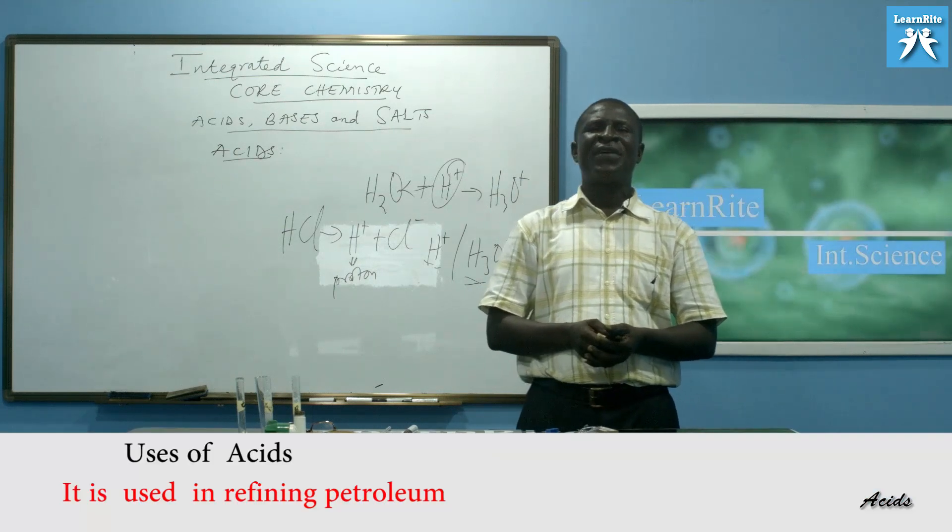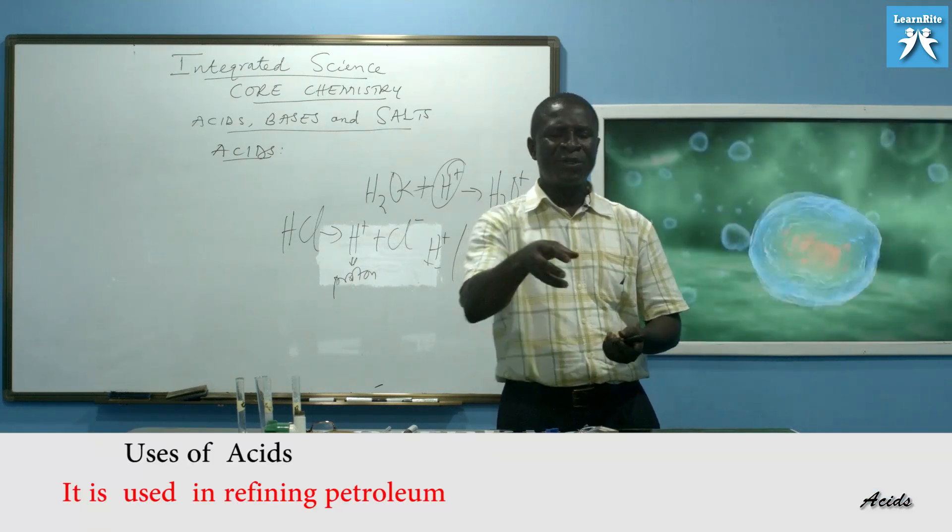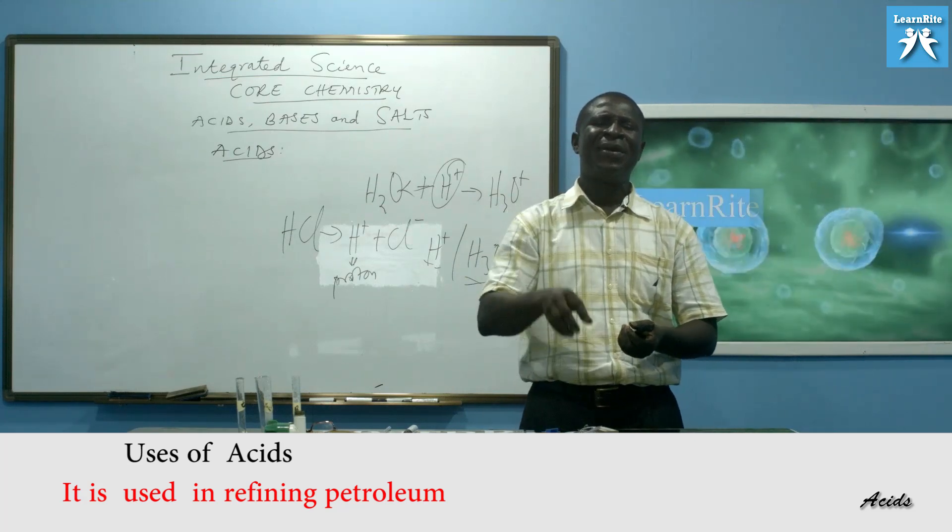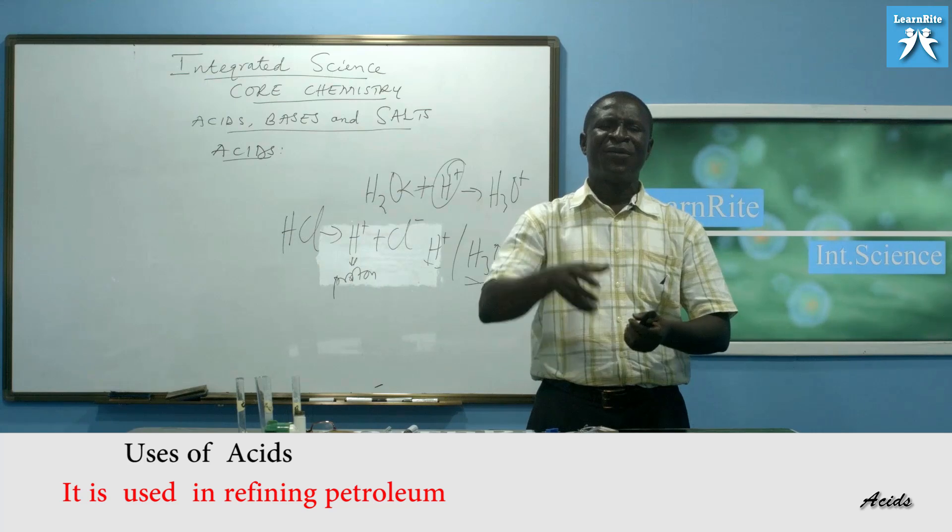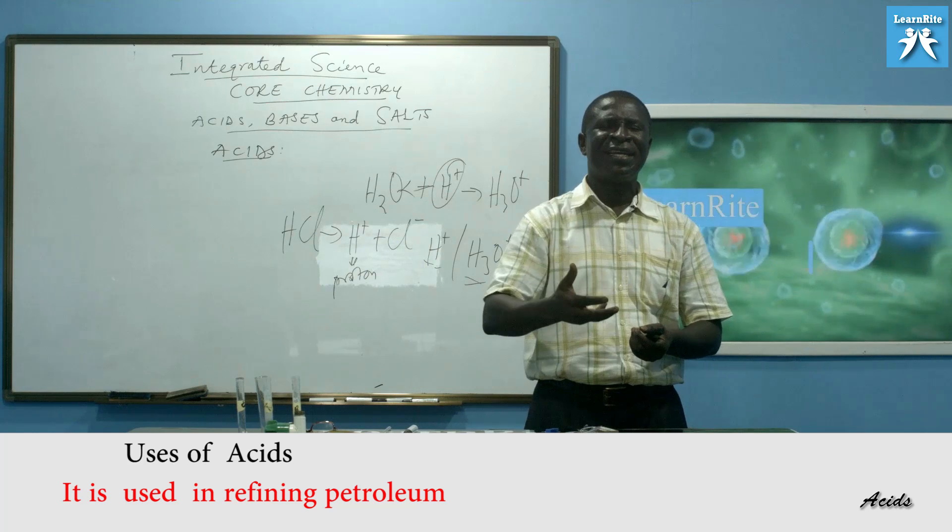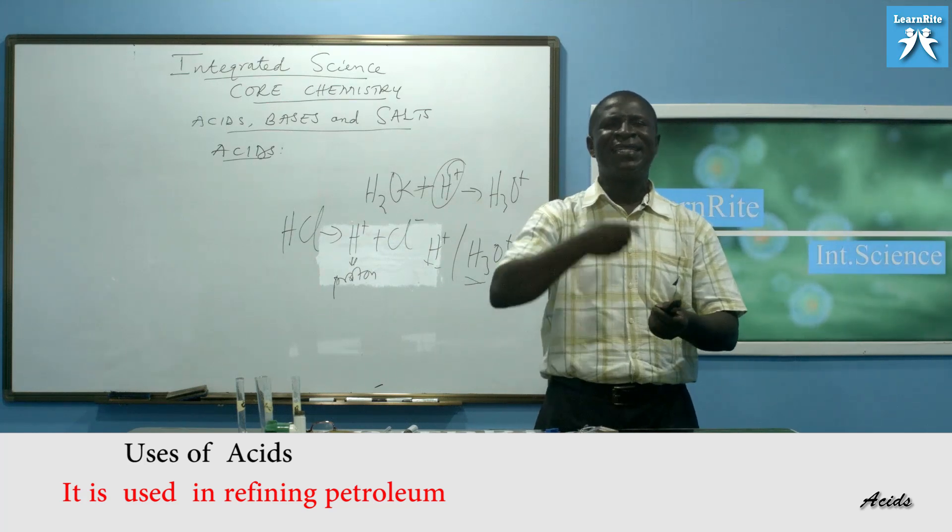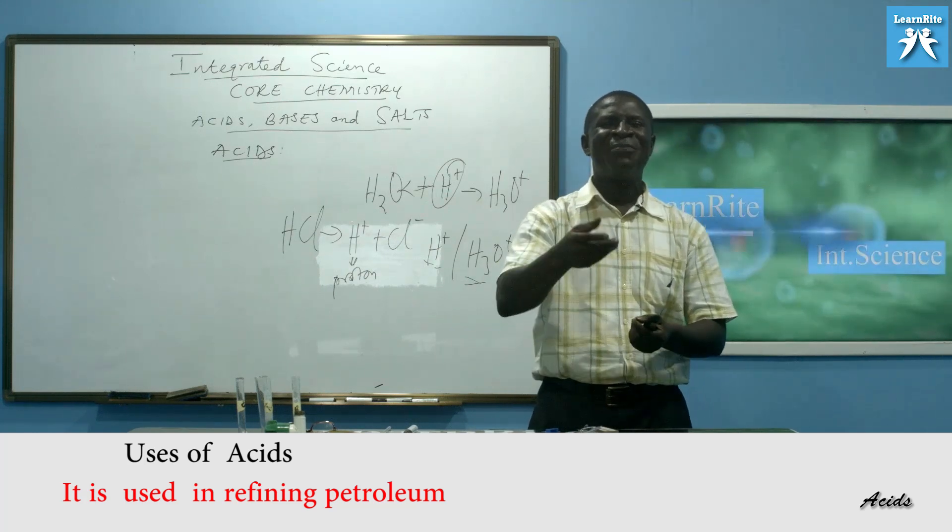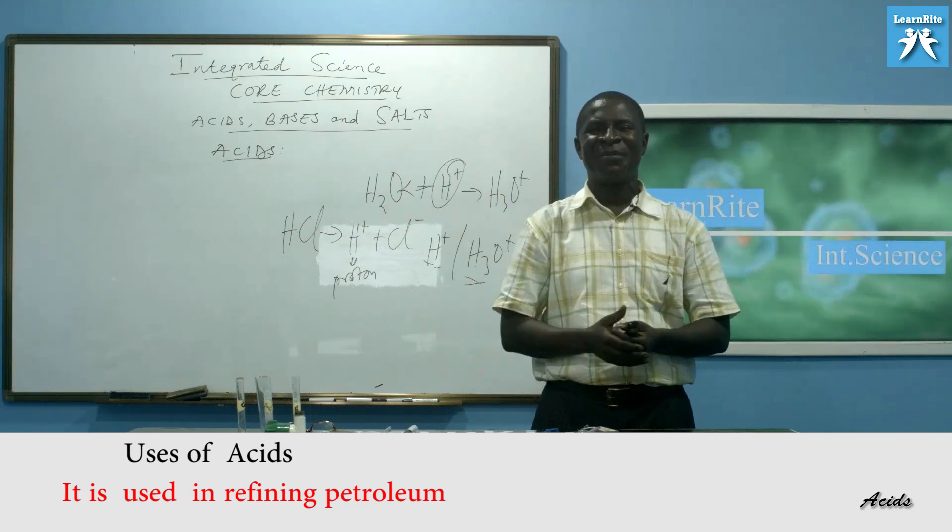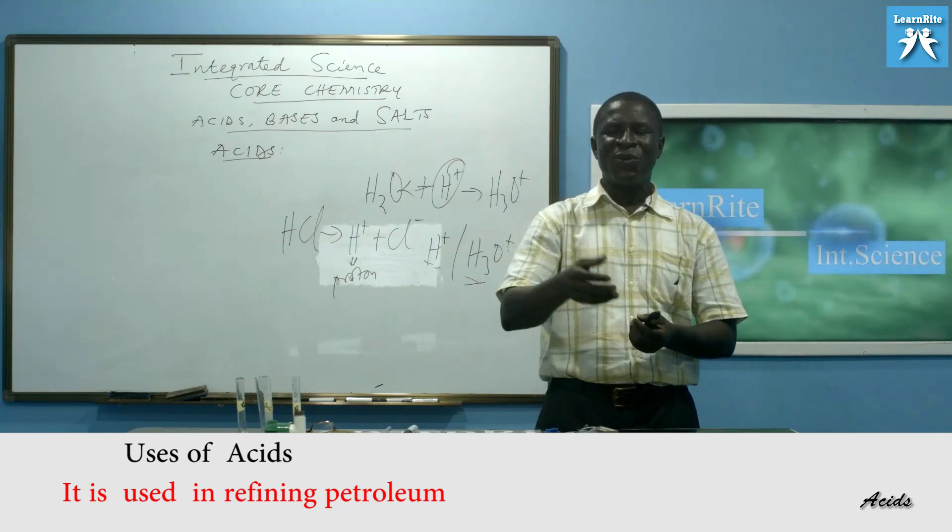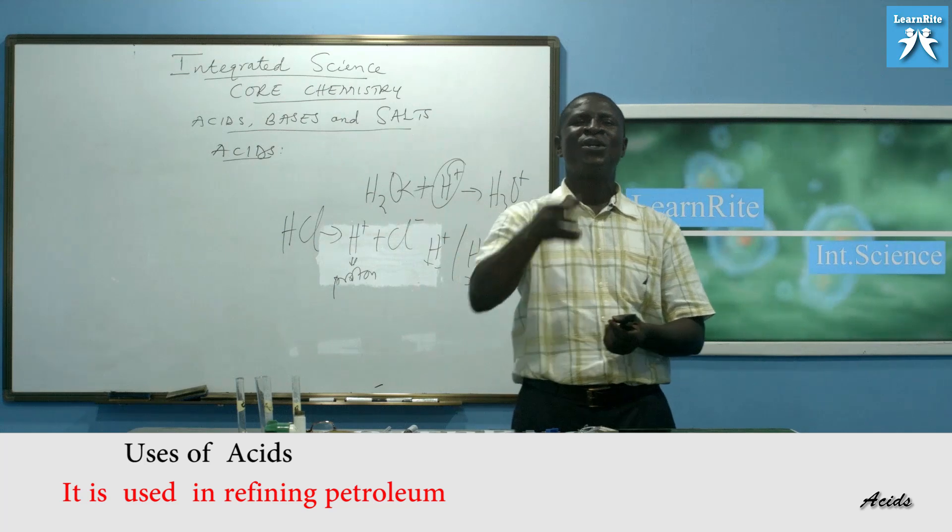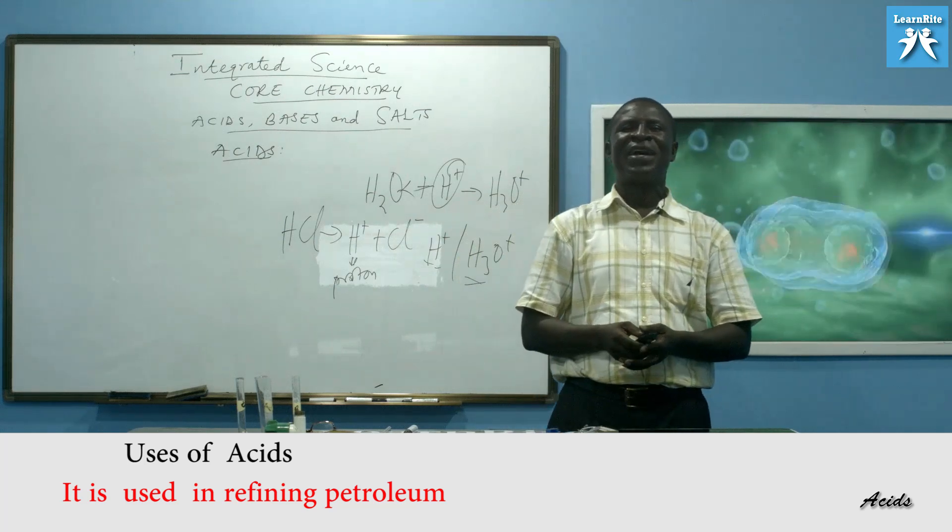Number two. It is used in refining petroleum. You know, petroleum is a crude oil. A substance that is dipped down under sea beds. And when it is extracted, it must undergo refining. And through the refining, we get petrol, diesel, gas oil, LPG gas, liquefied petroleum gas. All those things. As it is done in Tema oil refinery. So, whenever they are refining petroleum, acid is also used to assist in the refining process.